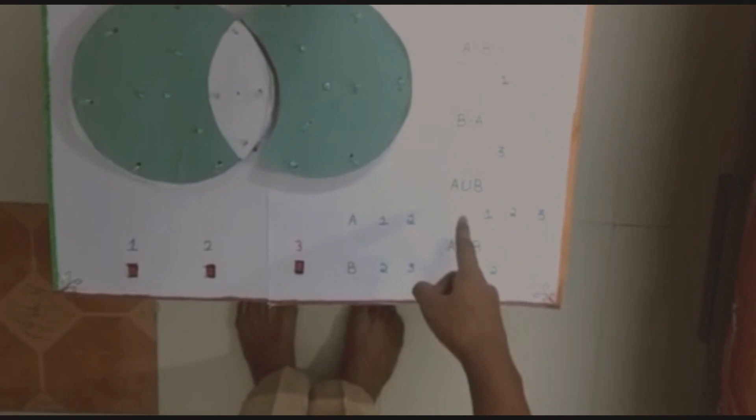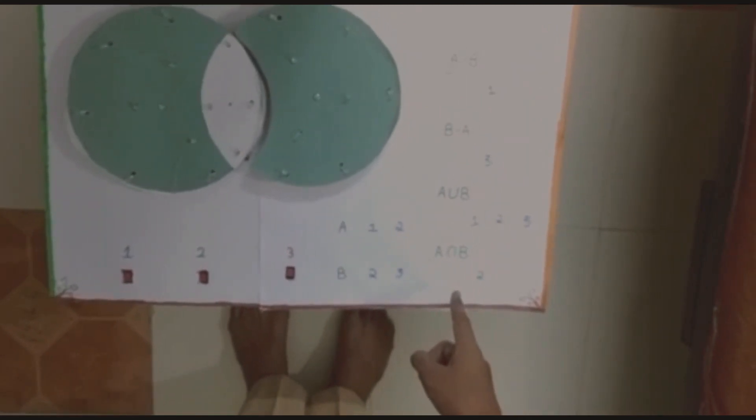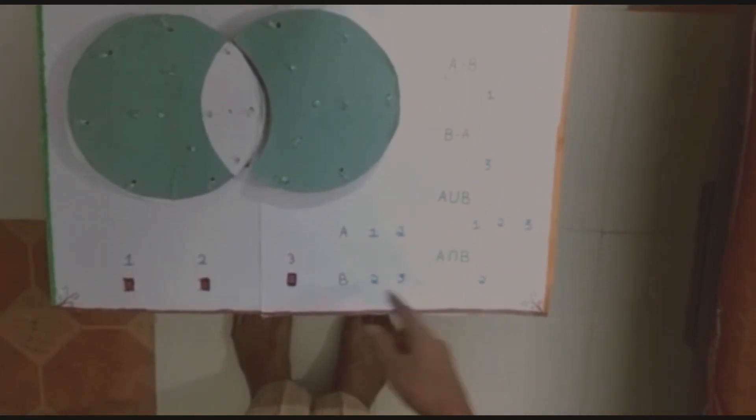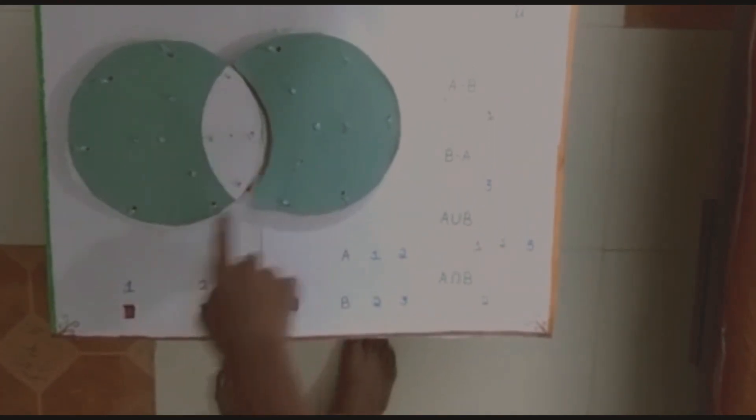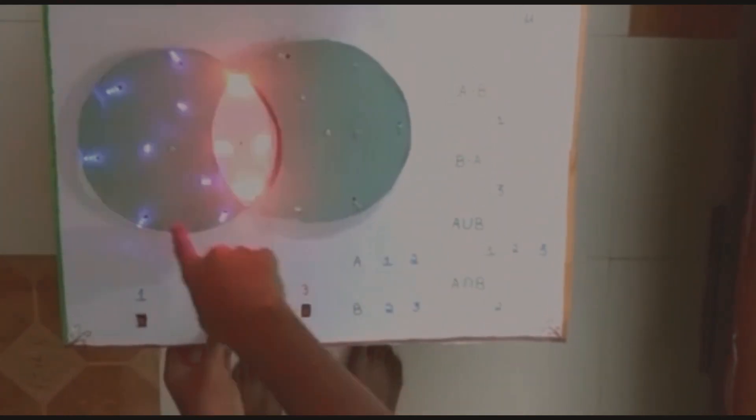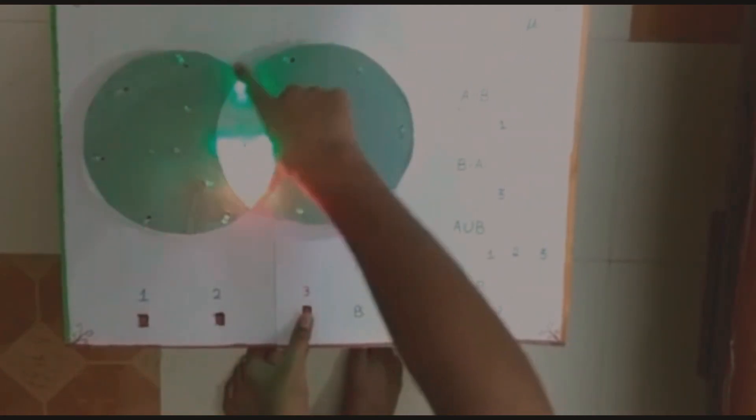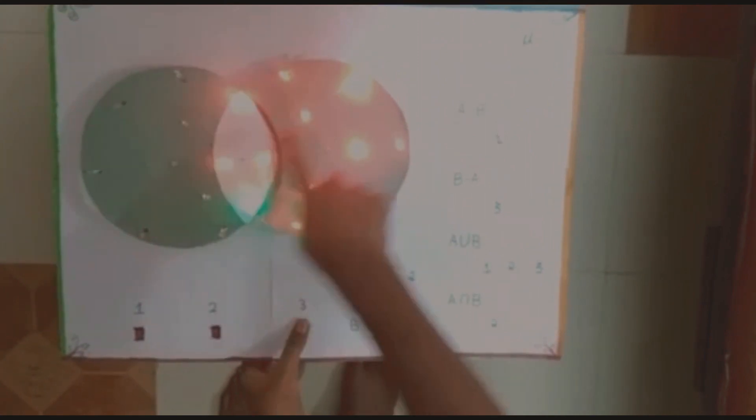We will discuss B-A, A Union B, and A Intersection B. Before talking about these, let's talk about Set A and Set B. Here comes Set A. This whole part is known as Set A. And now let's talk about Set B. This whole part is known as Set B.